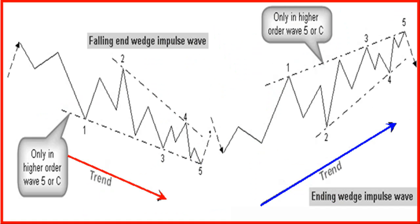Ending wedge impulse waves are mostly found in higher order impulse waves. Because the ending wedge impulse wave is a 5 impulse wave or a wave C correction wave, there will be a bigger market reversal on wave completion. At first there may be some confusion when waves 3 and 4 within the ending wedge impulse wave are seen as the start of extension waves 1 and 2. It is important to recognize the ending wedge impulse wave at the start of wave 5 by drawing the wedge pattern. The ending wedge impulse wave 5 is really the end of wave 5 of a higher order wave. The wave that follows is not an extended impulse wave 3, but a bigger correction wave. The ending wedge impulse wave can be easily recognized by the internal 3-wave structure for all waves.